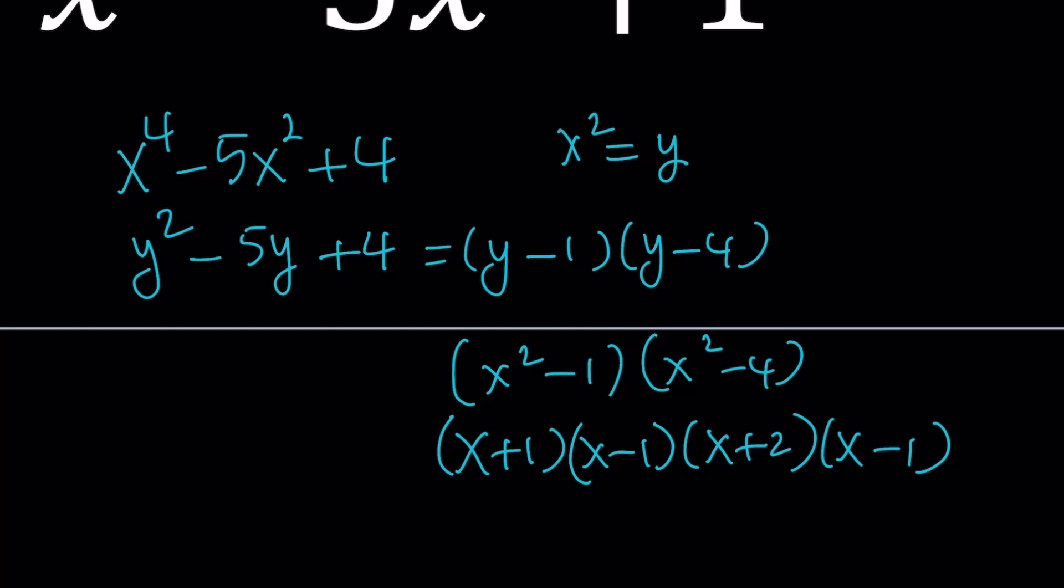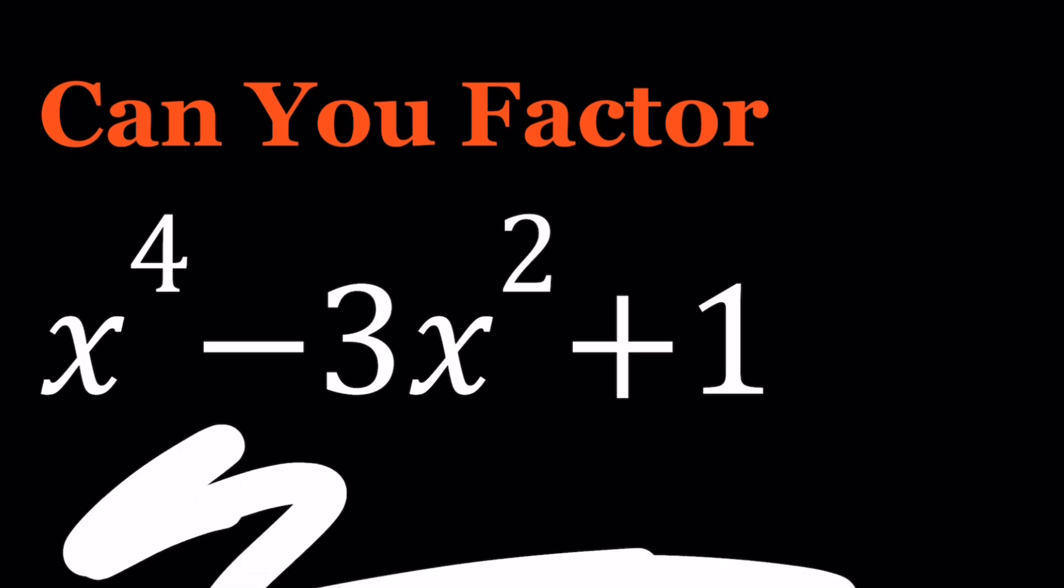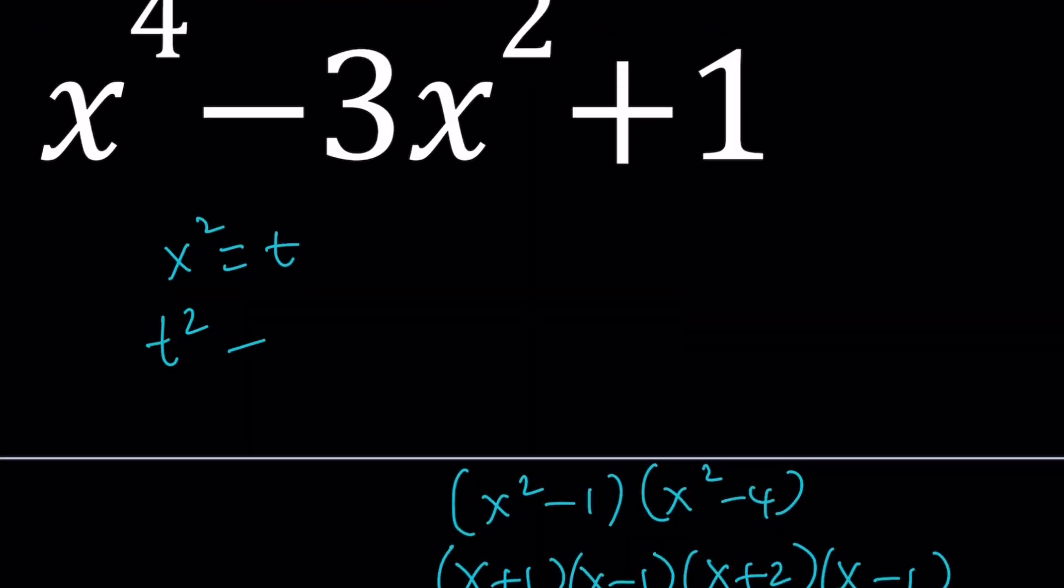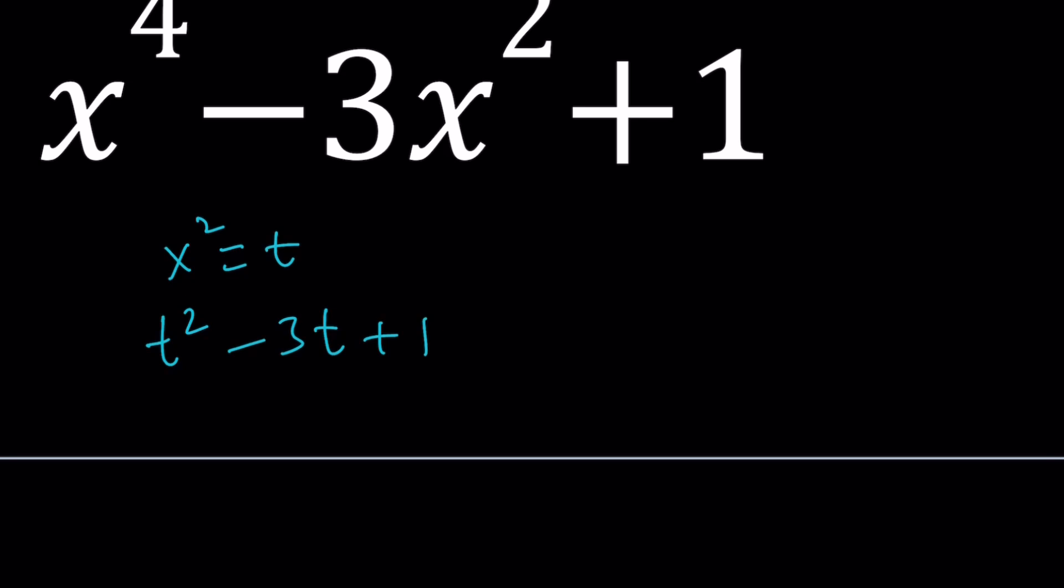Can we do the same thing here? That's a good question. Let's go ahead and find out. Now, can we replace x squared with something? Let's go ahead and try that. So I'm going to replace x squared with something like, let's use t this time. And then this is going to give us t squared minus 3t plus 1. Now, the problem with this approach is t squared minus 3t plus 1 is not factorable.